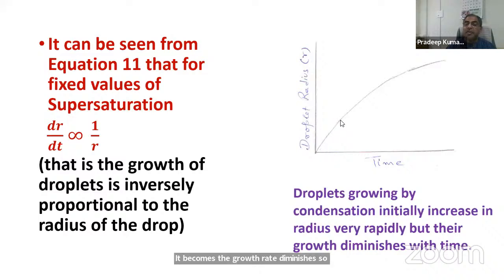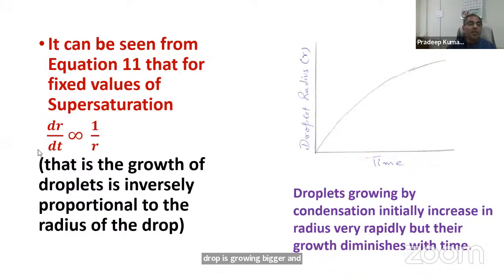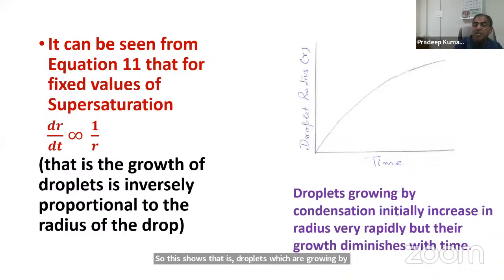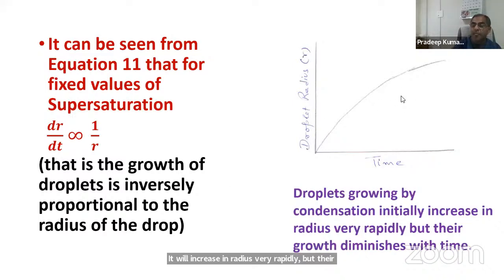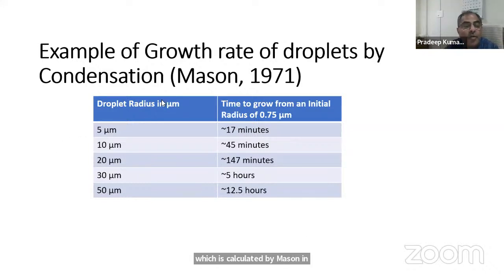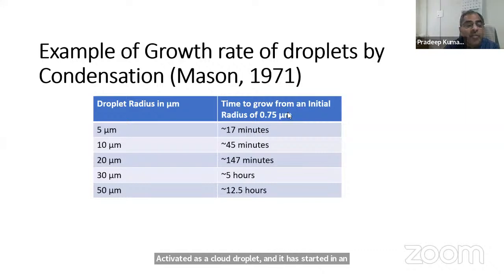This shows that droplets growing only by water vapor condensation increase in radius rapidly at first, but their growth rate diminishes with time. An example calculated by Mason in 1971: a drop activated as a cloud droplet starting at an initial radius of 0.75 microns takes about 17 minutes to grow to 5 microns, and about 45 minutes to grow to 10 microns. For the same droplet to grow to a large cloud droplet of 50 microns takes about 12.5 hours. This means growth by condensation is a very slow process for producing raindrops.